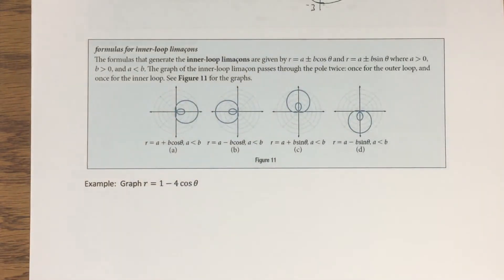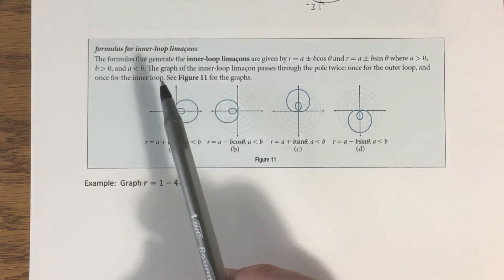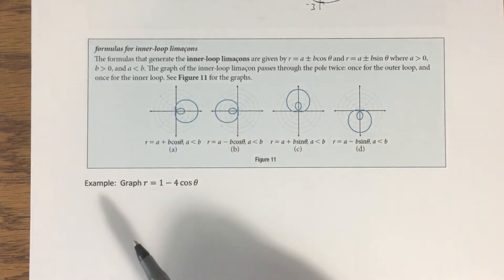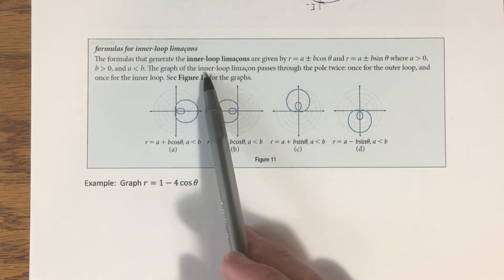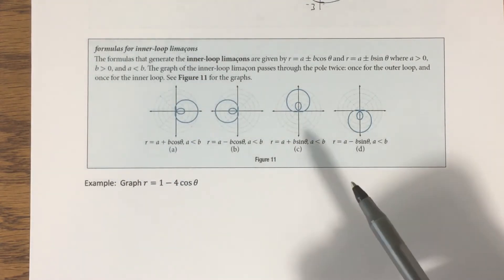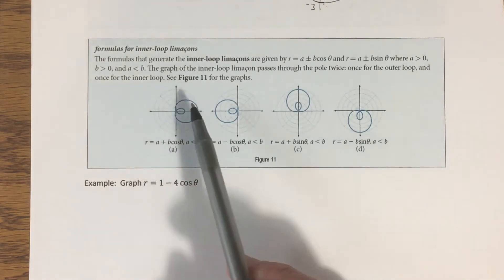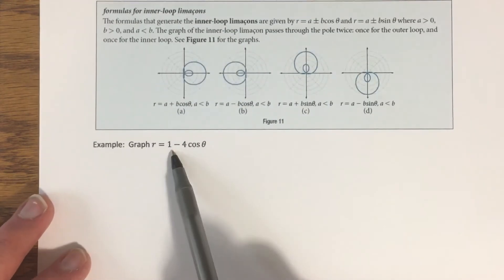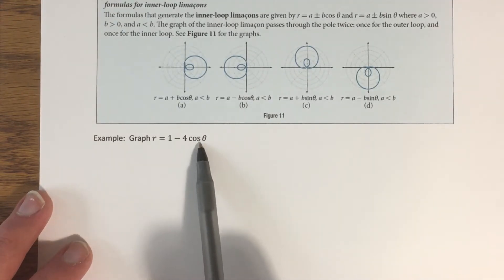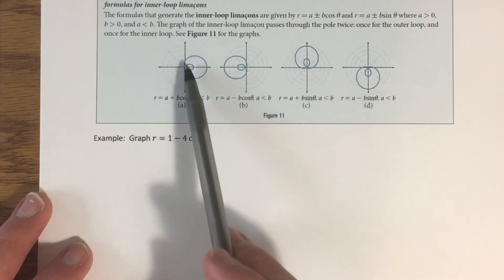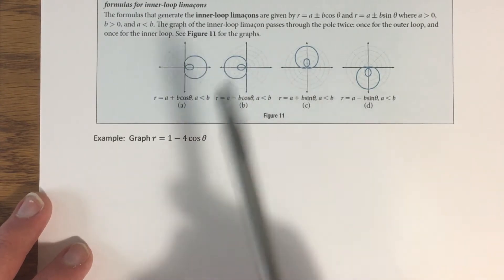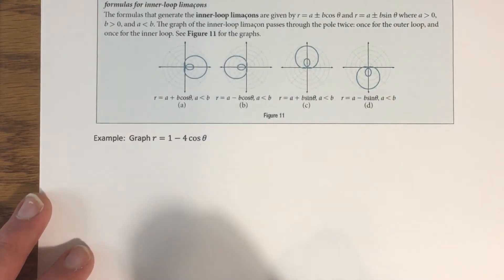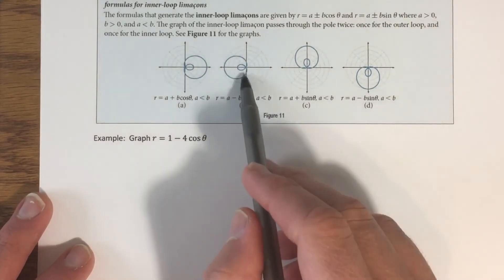The final case of a limaçon is called an inner-loop limaçon. You can see there's a large outer loop and a smaller inner loop. The equations for these are kind of the reverse of the previous case: instead of a being larger than b, we need a to be smaller than b. The orientation works the same way as before. Let's graph r = 1 - 4cos(θ). The cosine means it's symmetric about the polar axis, and the minus means it points left.